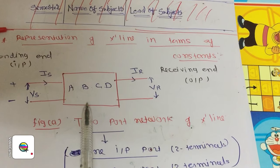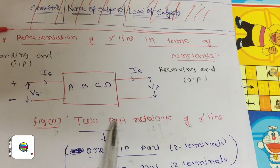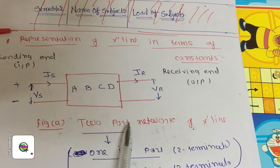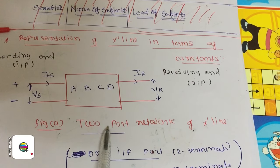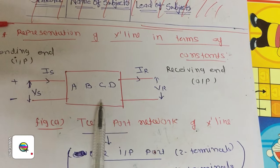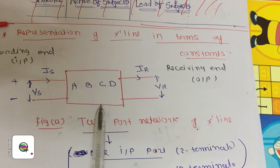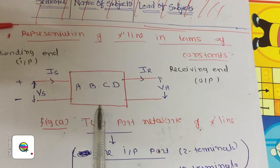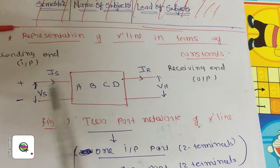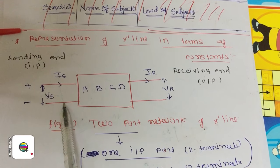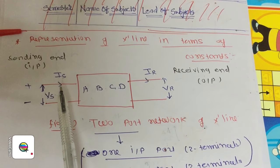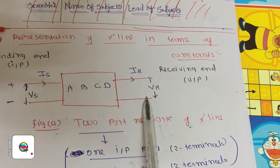You must know what is the meaning of a 2-port network. You already studied it in a previous subject like Circuit and Network — single-port and 2-port network. A 2-port network means this is a black box available with 2 ports. This is the 1st port, and this is the 2nd port. We are considering two terminals as a single port, so a combination of two terminals is considered one port.